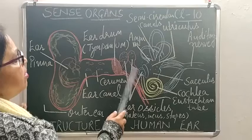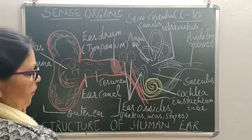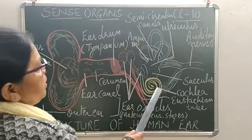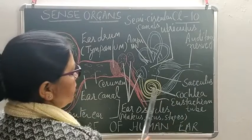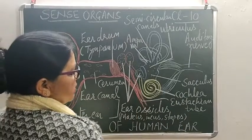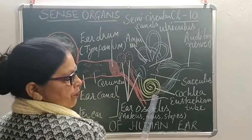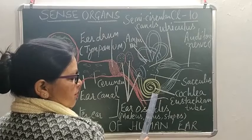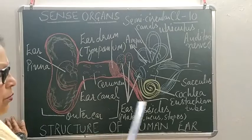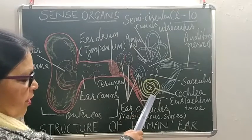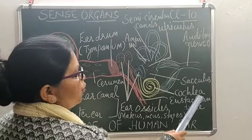Together these three bones — hammer, anvil, and stirrup — are called ear ossicles, and they are located in the middle ear. Now the third part is the internal ear. In the internal ear there are two parts: one is the cochlea, which is shaped just like the shell of a snail.